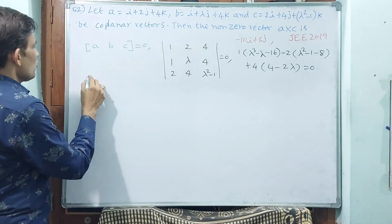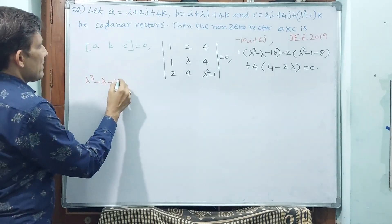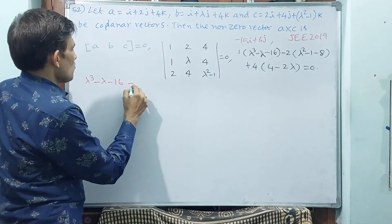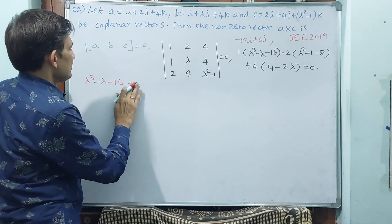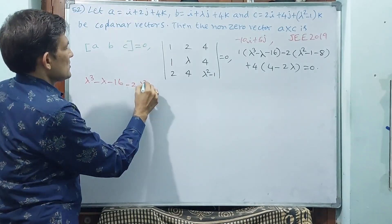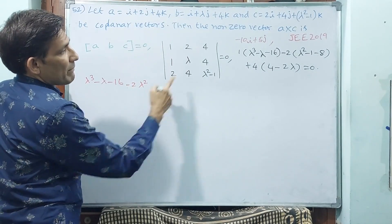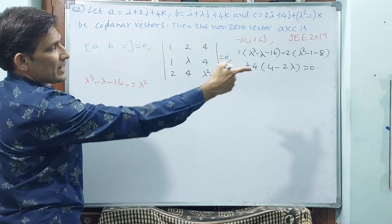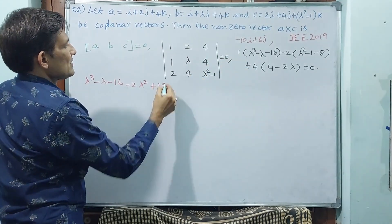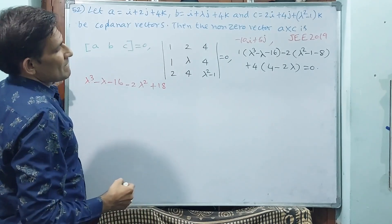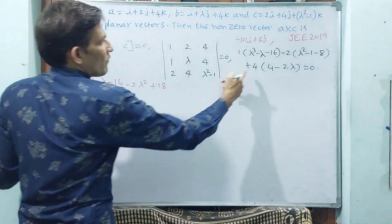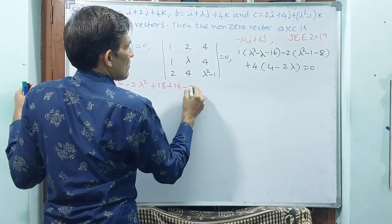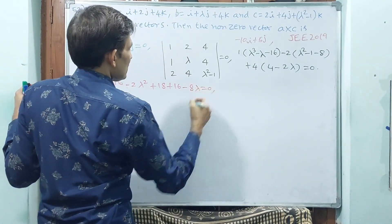Expanding further: lambda cubed minus lambda minus 16, minus 2 lambda squared. Minus 2 into minus 9 gives plus 18. Then minus 4 times lambda, giving minus 8 lambda. This equals 0.